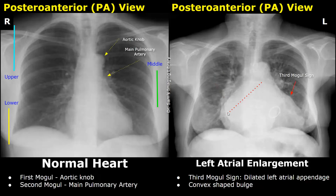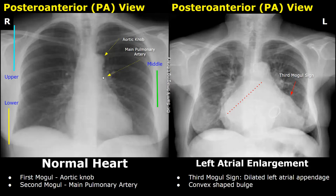The third mogul sign refers to a convex-shaped bulge due to the enlarged left atrial appendage, which may be seen in the setting of left atrial enlargement. The first mogul is the aortic knob, the second mogul is the main pulmonary artery, and the third mogul — this convex bulge — is not present in normal cases but appears in cases of left atrial enlargement.